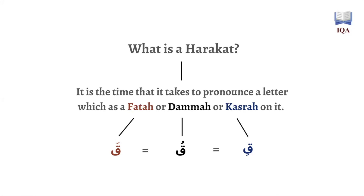The word harakah can have two different meanings depending on the context. It can mean the different diacritics, the different accents that are placed on letters in the Arabic language — meaning the fatha, the dhamma, or the kasara. These three different accents themselves are all referred to by the term harakah. So you'll say: what's the harakah on the letter? It's a fatha, it's a dhamma, it's a kasara. That's one meaning the word harakah can have.